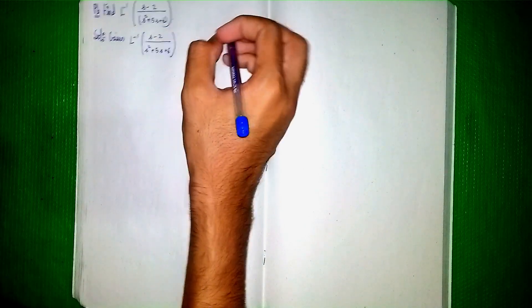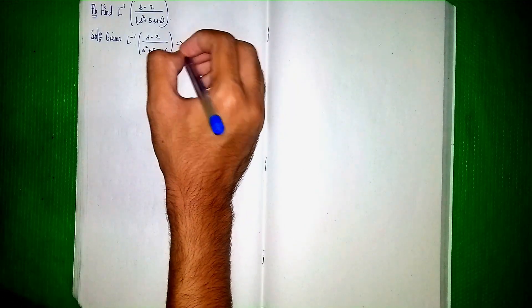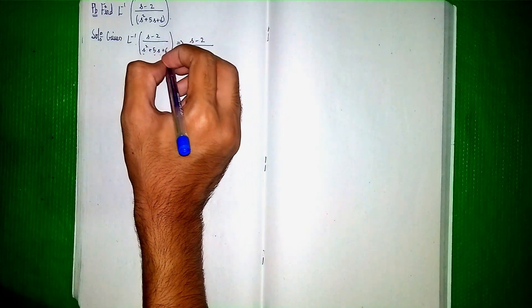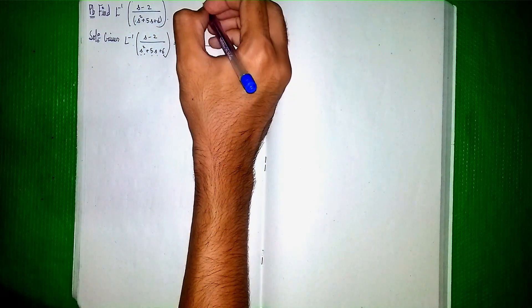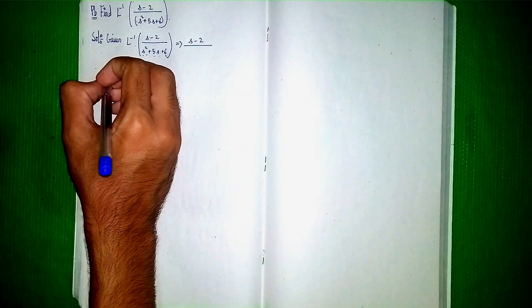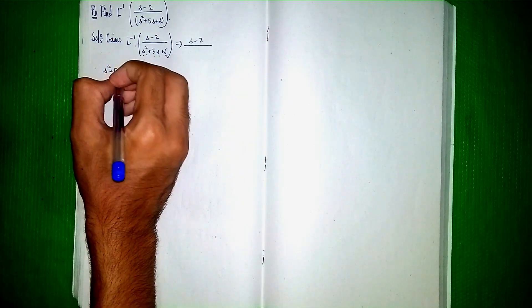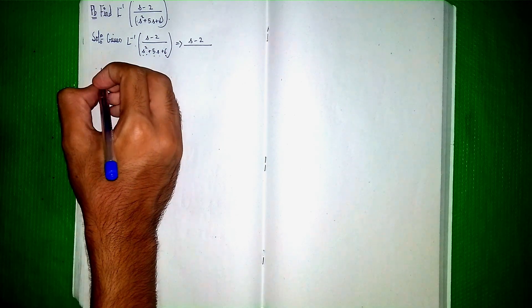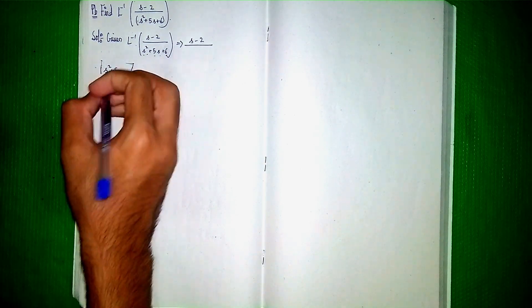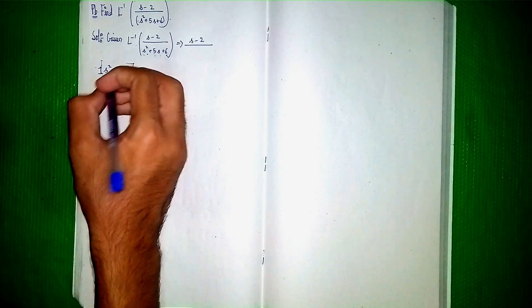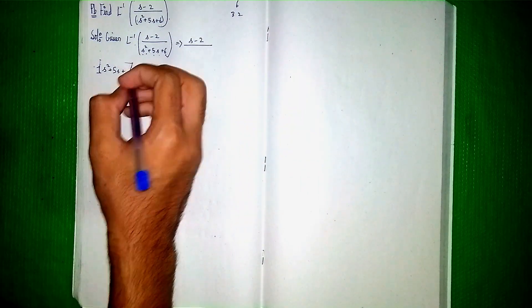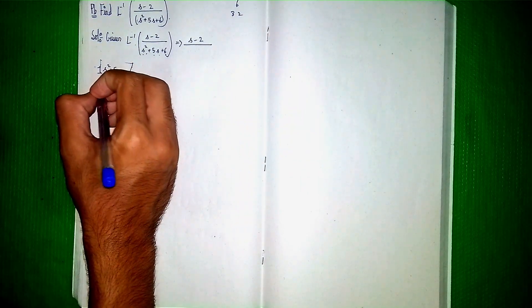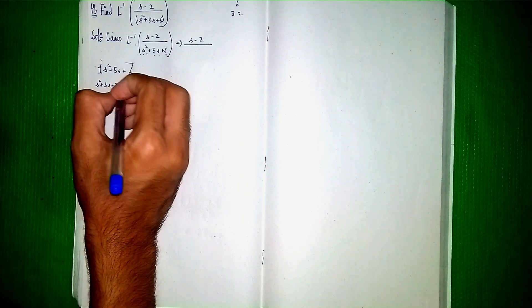Now we solve this question by the partial fraction method. Take (s minus 2) divided by (s squared plus 5s plus 6). This is a quadratic equation, so we have to find the factors. The factors of 6: since 3 times 2 equals 6 and 3 plus 2 equals 5, we get s squared plus 3s plus 2s plus 6.